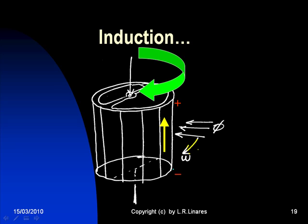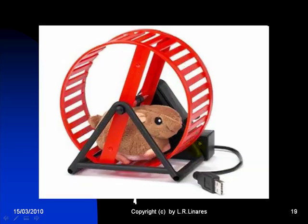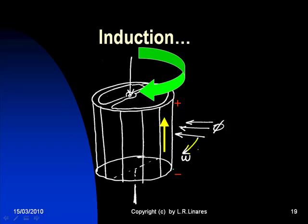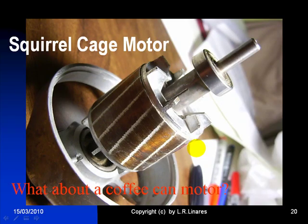If you imagine that rotor rotated 90 degrees, it looks indeed like a squirrel cage. That's why that type of rotor is nicknamed a squirrel cage rotor. And the whole motor around that is called a squirrel cage induction motor.